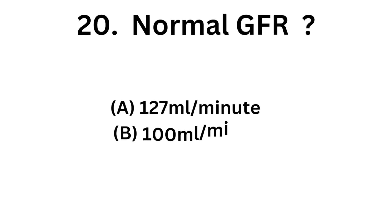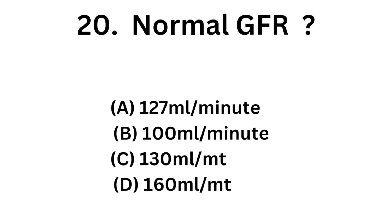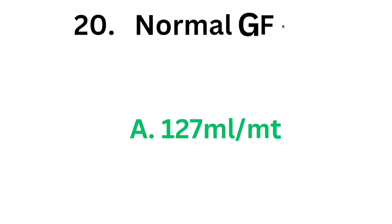Question number 20: Normal glomerular filtration rate. Option A: 127 ml per minute. Option B: 100 ml per minute. Option C: 130 ml per minute. Option D: 160 ml per minute. The correct answer is Option A: 127 ml per minute. Normal glomerular filtration rate is 127 ml per minute.